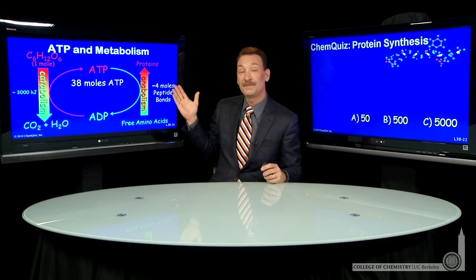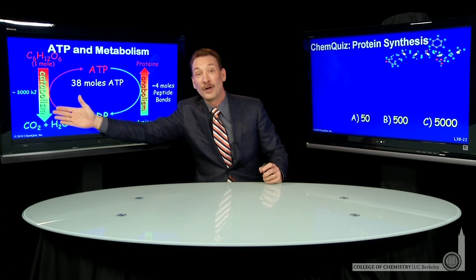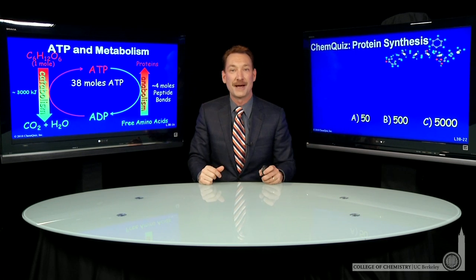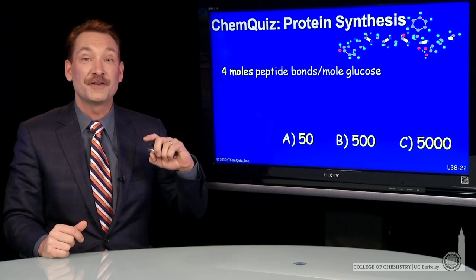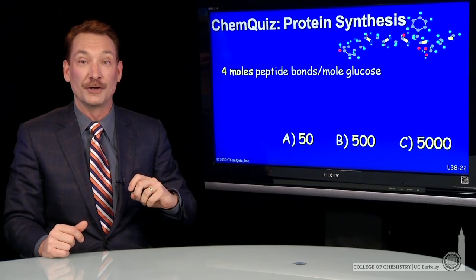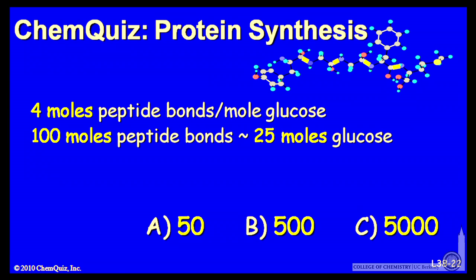And you get about 4 moles of peptide bonds for every mole of glucose that you metabolize. So we have 4 moles of peptide bonds per mole of glucose. And to make serum albumin, we have to make about 100 moles of peptide bonds. So that's 25 moles of glucose.